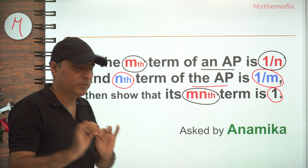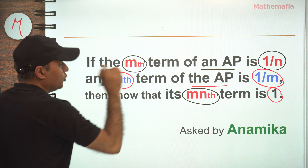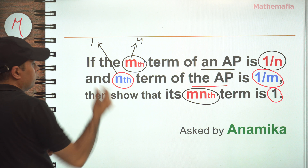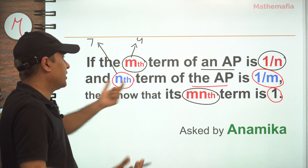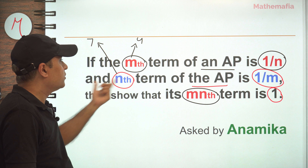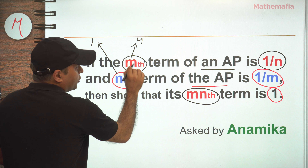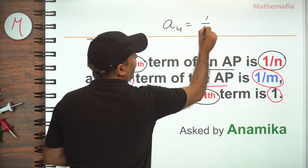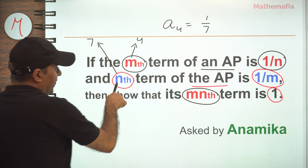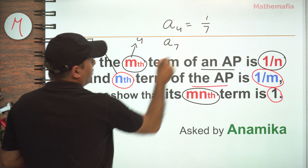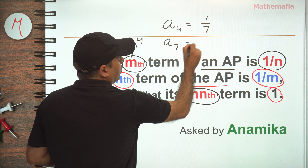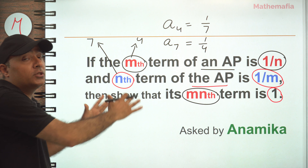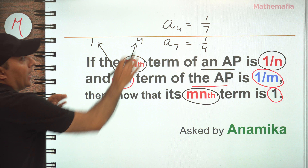Let's assume that the value of m is 4 and the value of n is 7 — I'm just taking two numbers. So this means the fourth term, a₄, is 1/n, which is 1/7. Similarly, the nth term a₇ is equal to 1/m, and 1/m means 1/4.